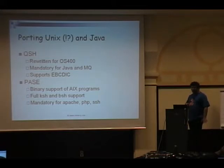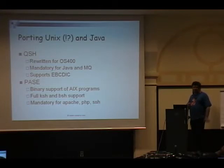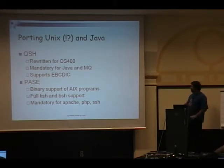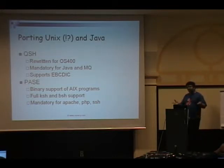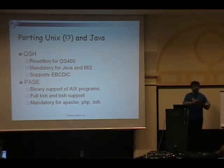There are two UNIX environments on the AS/400. One is the Q Shell, written specifically for OS/400, which supports IPSIDIC and is mandatory for running Java or MQ — a successful message brokering software. The other is PASE, which provides binary support for AIX programs. You can take any binary compiled on AIX, place it in a specific location on the AS/400 file system, and execute it — for example, porting OpenSSH, or unfortunately, netcat.